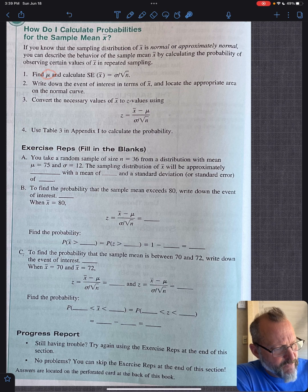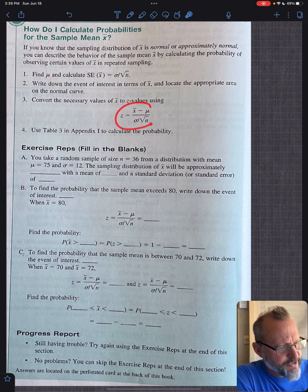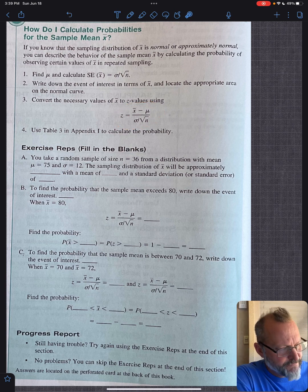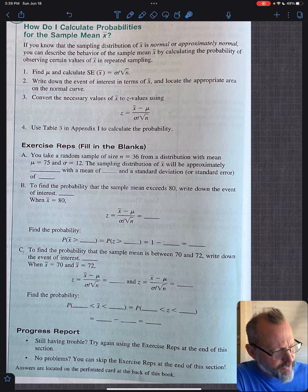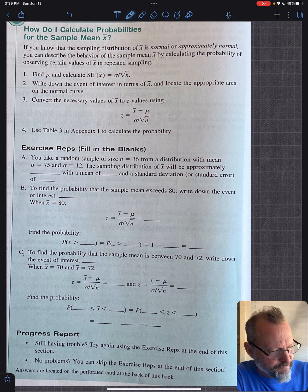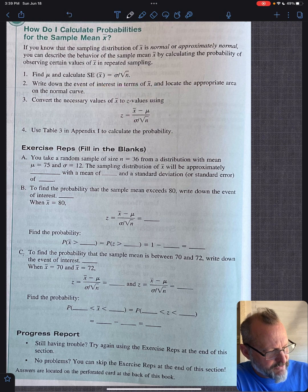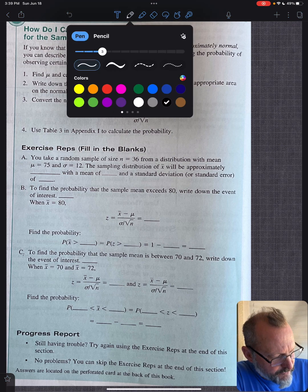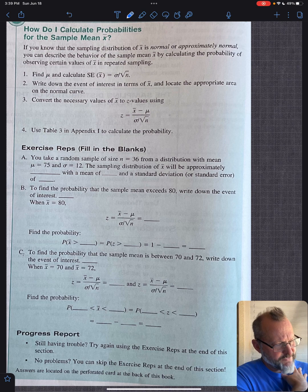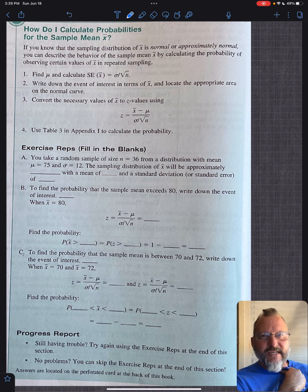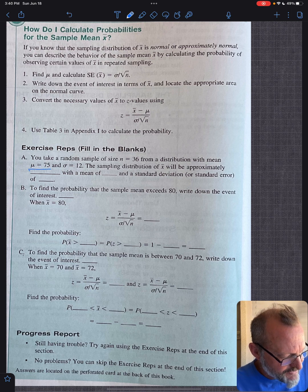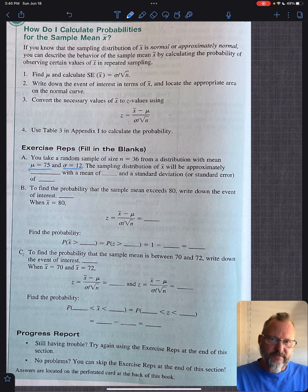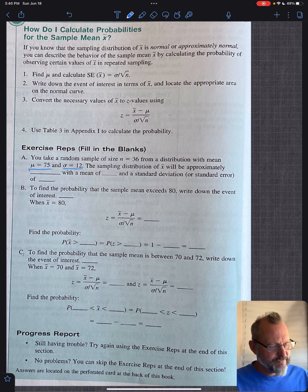X bar from a normal or approximately normal population. We're going to find mu. We're going to calculate the standard error. We're going to convert to Z score from that using that formula. And then we're going to use the tables. So you take a random sample of size 36, and the nice thing about 36 is what? The square root is 6. From distribution with mean, you know the distribution. You know that the mean is 75 and the standard deviation is 12.